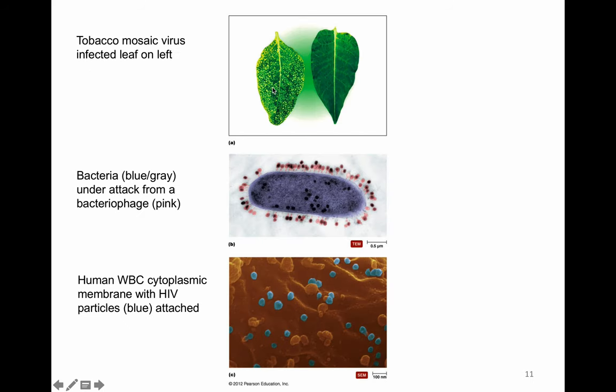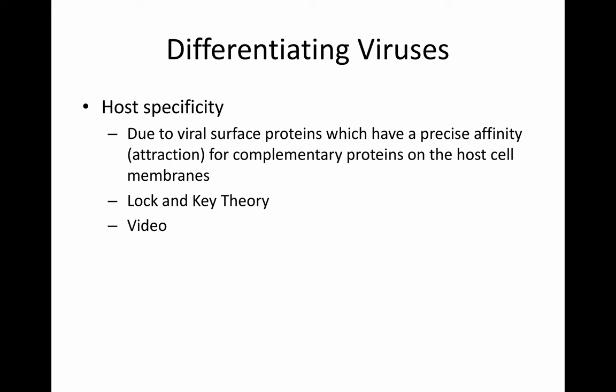Here are some examples of viruses. Here's tobacco mosaic virus infecting the leaf of a tobacco plant — you can see the little pock marks on the leaf indicating where the virus is infecting. Here is a bacteriophage infecting a bacterial cell, with the bacteriophage in pink and the bacterial cell in bluish-gray. And the HIV virus highlighted in blue is shown attaching to a human T lymphocyte. The host specificity is due to the viral surface proteins, which have a precise affinity for complementary proteins on the host cell membranes — those host cell receptors interacting with the viral surface proteins in the lock-and-key theory.